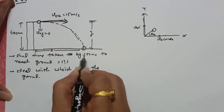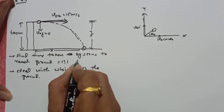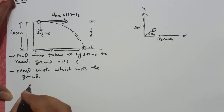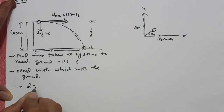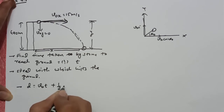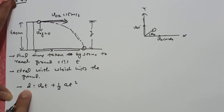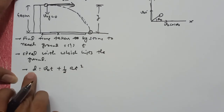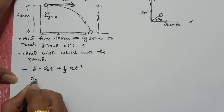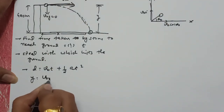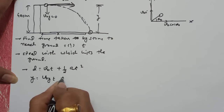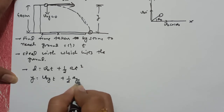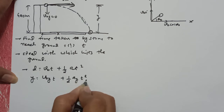Find the time taken by the stone to reach the ground. Suppose this time is T. So let's apply the formula: D is equal to V0T plus 1/2 aT square. Let's write the formula in the form of y-axis, तो y-axis पे जो भी distance cover किया है उसके लिए लिखूँगा: y = V0y into T plus 1/2 AY into T square.